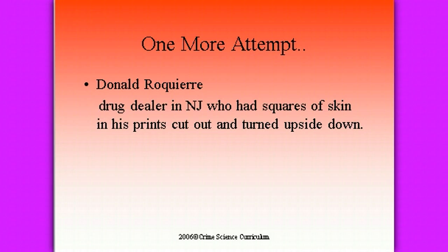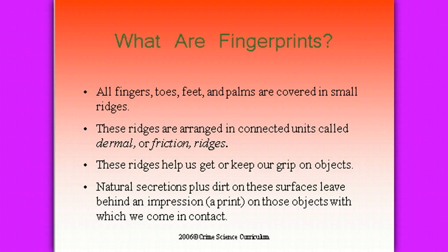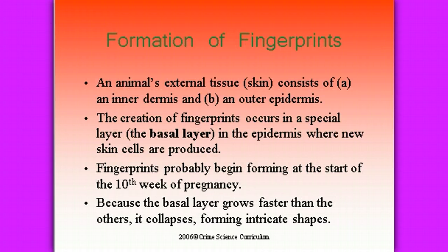So what exactly are fingerprints? All of your fingers, toes, feet, and palms are covered in small ridges. These ridges are arranged in connected units called dermal or friction ridges, which help us grip objects. The natural secretions plus dirt on these surfaces leave behind an impression or print on objects we come into contact with. An animal's skin consists of an inner dermis and an outer dermis, and the creation of fingerprints occurs in a special layer — the basal layer in the epidermis where new skin cells are produced.